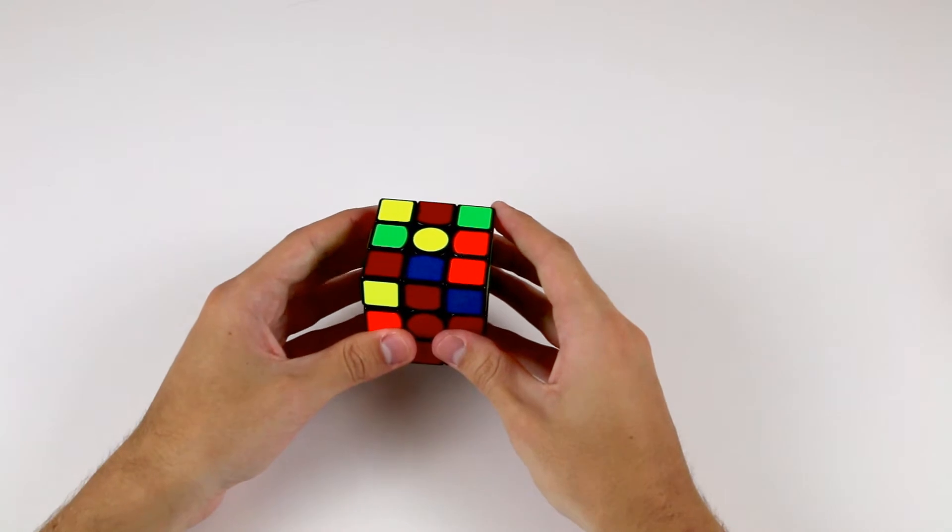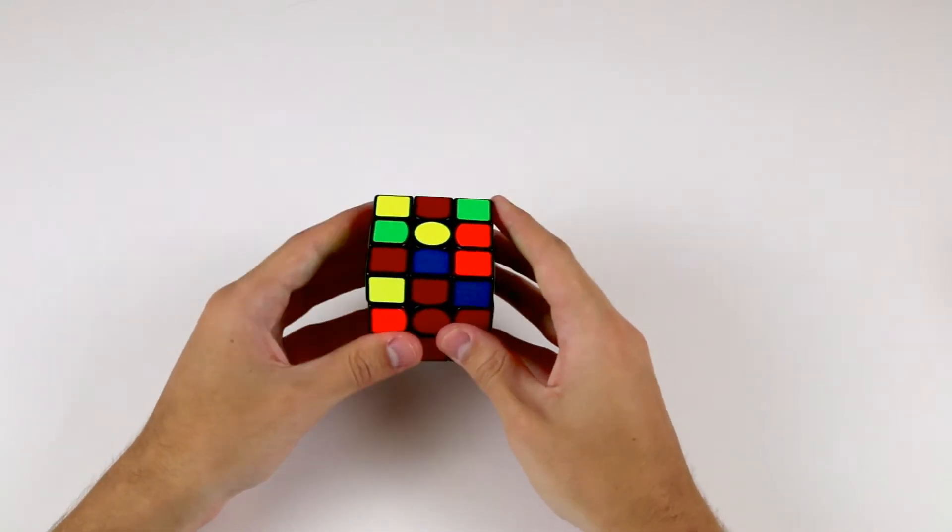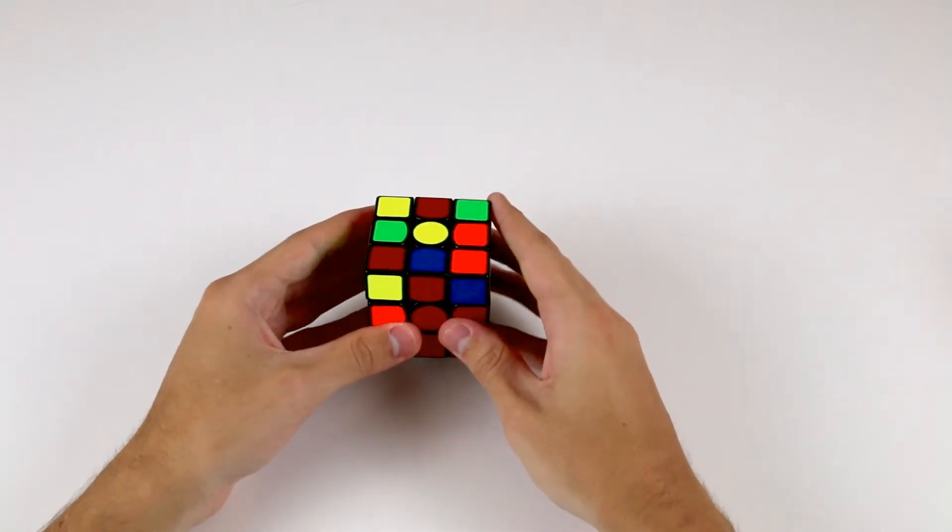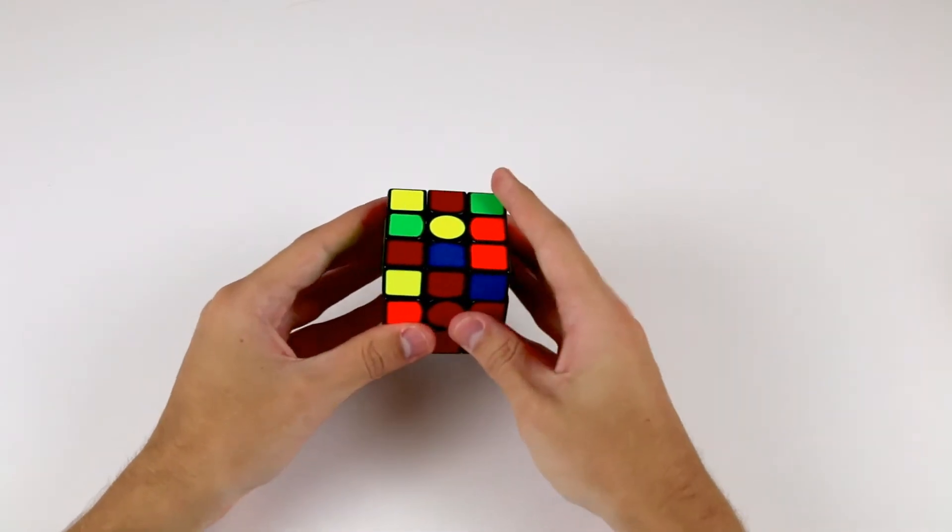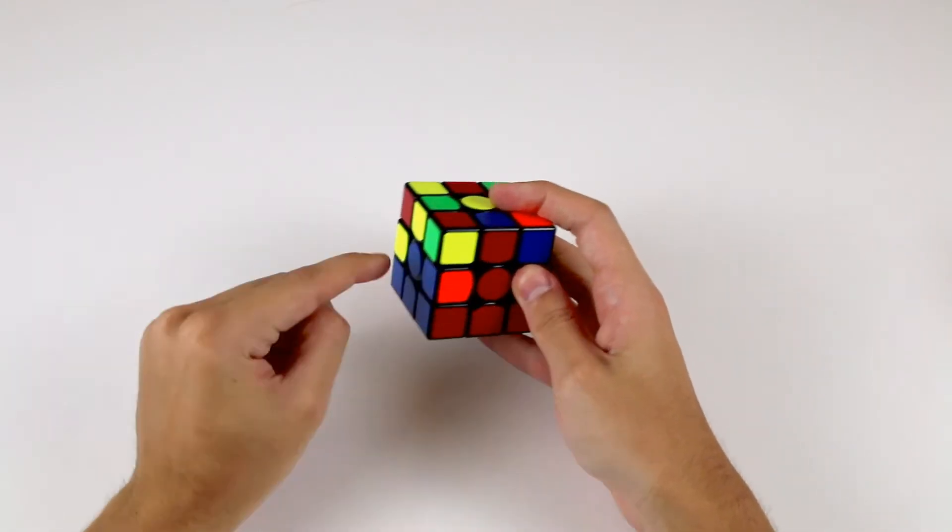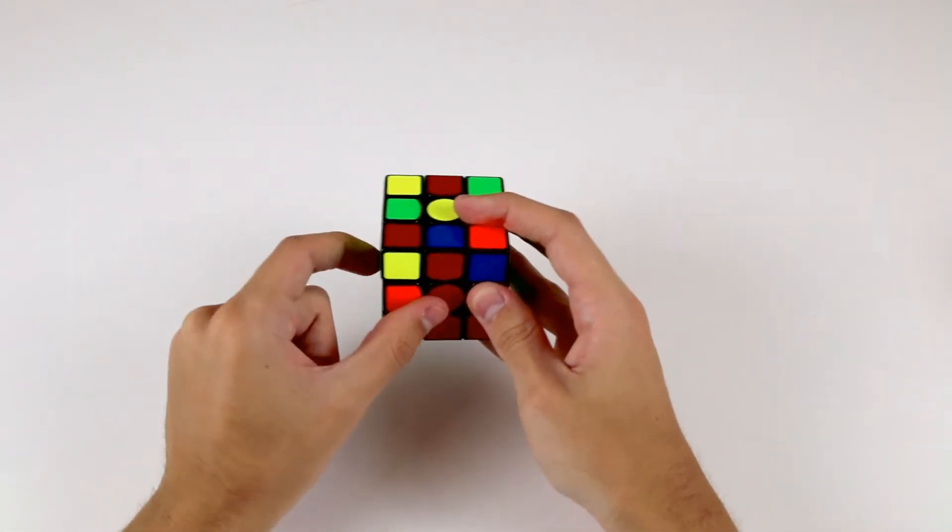Your first step is to find an edge in the top layer which belongs in a position in the middle layer. So for example, here we have the blue and red edge, which belongs here in between the blue and red centers like an edge does.